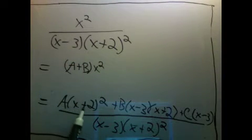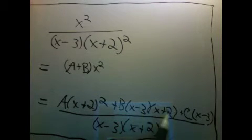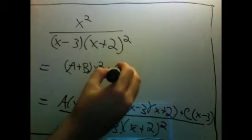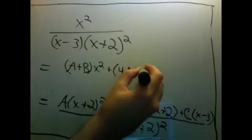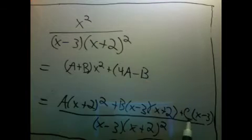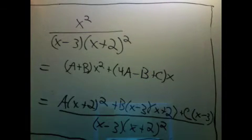Here I'll have 4x times a, here I'll have negative x times b, so I'll have 4a minus b. This is something you can check, I'm just sort of doing it in my head, and I have c times x there, so that's the x term.